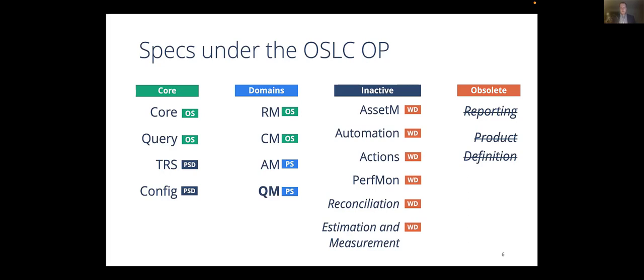The domain specifications are the most popular domains that vendors choose to implement. They are Requirements Management, Change Management, Architecture Management, and Quality Management specifications. You'll find many products on the market that implement one or more of these domain specifications, in addition to some of the core ones. Finally, we have a few specifications that are inactive — they are at working draft status, and if someone would like to pick them up and work on them, we'd be very happy. We also have a few specifications that are obsolete, but if there is significant interest from the community, we can revive them.